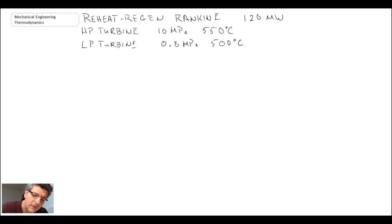The low pressure turbine operates at 0.8 megapascals, and the steam comes in at 500 degrees Celsius after a reheat process. Finally, the condenser pressure is 10 kPa. The things we're looking for: A is M dot boiler, or the mass flow rate through the boiler, and B is the thermal efficiency of this cycle.